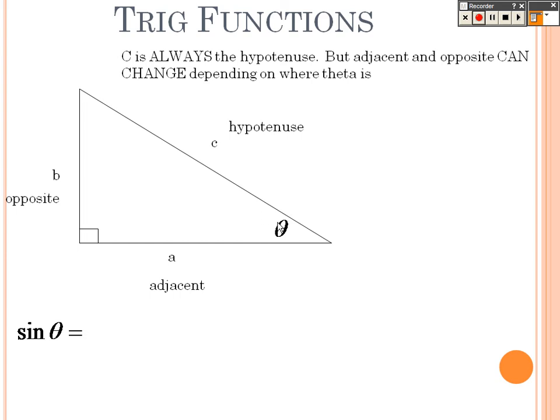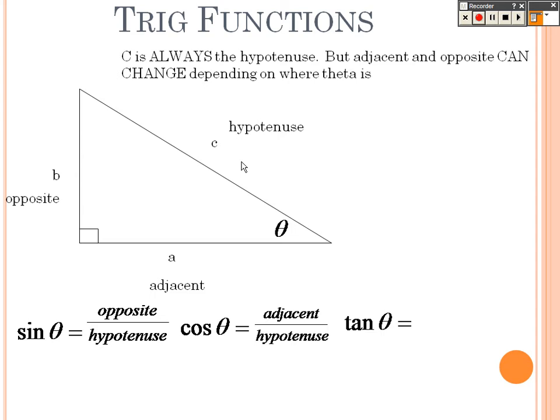So, sine of theta. Sine, you're going to have to remember this if you don't from trig. Sine is opposite over hypotenuse. Cosine is always adjacent over hypotenuse. And tangent is always opposite over adjacent.